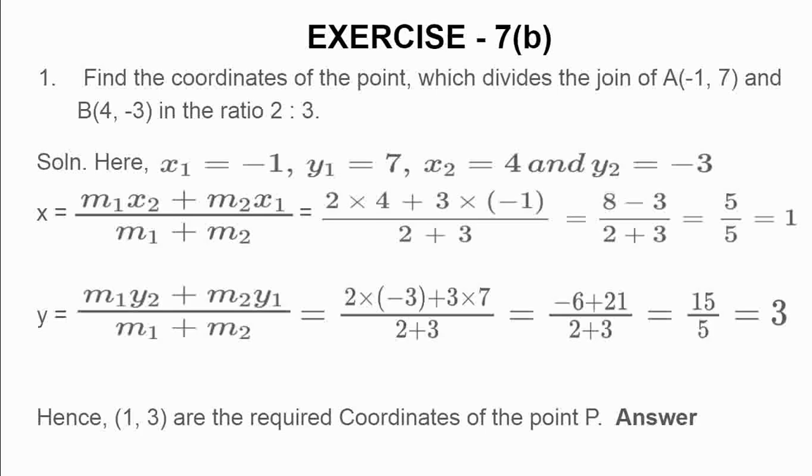Now, I will apply section formula x equal to m1 x2 plus m2 x1 divided by m1 plus m2. You put the value of m1, that is 2, multiply, what is the value of x2? It is 4, so 2 multiply 4 plus m2, that is 3, multiply x1, what is the value of x1? Minus 1 divided by m1 plus m2, 2 plus 3. Then you calculate 2 into 4, 8 plus 3 into (-1), 8 minus 3 by 2 plus 3, 5 upon 5 equal to 1.